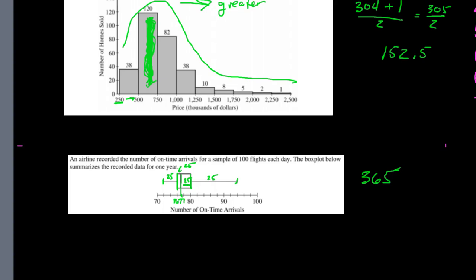Q1 looks to be about 76 and Q3 about 80, so the IQR = Q3 − Q1 = 80 − 76 = 4. The overall spread goes from about 72 to 94. The most common questions will ask about IQR, median, and where the mean is in comparison to the median — it will always go towards the spread on that tail side.